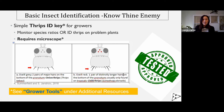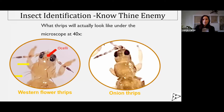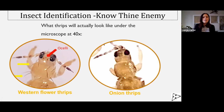This is under the additional resources tab on the floriculture blog. Here's a picture of what the thrips actually look like under the microscope at 40x magnification. Western flower thrips have red ocelli — those eye spots — while onion thrips have gray. When they're red, they're very red. When they're gray, it sort of just looks like the thrips got hit in the head on the forehead. Onion thrips don't have hairy shoulders — this area is called the pronotum — while Western flower thrips looks like it needs to go for a wax job. So it's pretty easy to tell them apart.